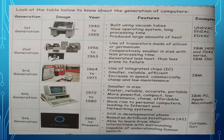1st Generation Computers — let us look at its features and examples. In 1st generation computers, the main features are: they were built using vacuum tubes, had a slow operating system, long processing time, and produced a large amount of heat. Examples of 1st generation computers are UNIVAC, ENIAC, and EDVAC. The time period was 1942 to 1955.